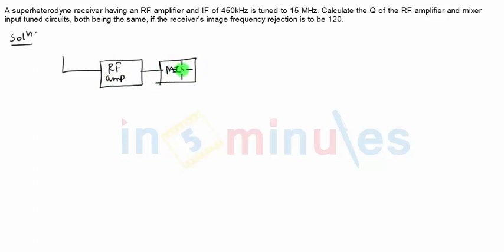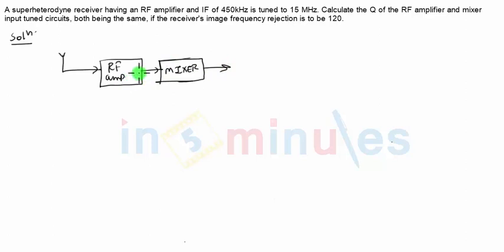So whenever there are multiple amplifiers or whenever we have to consider the mixer also, then we will calculate multiple image frequency rejection ratios. And the overall image frequency rejection of this whole part will be nothing but the product of individual ratios. In this case it will be alpha 1 into alpha 2.